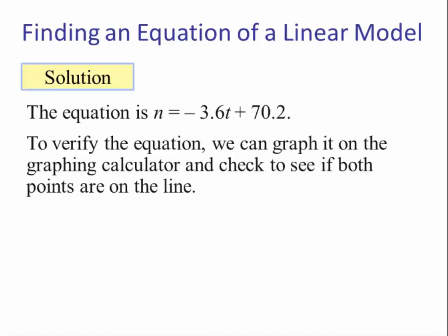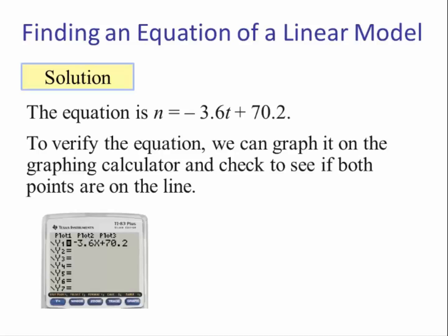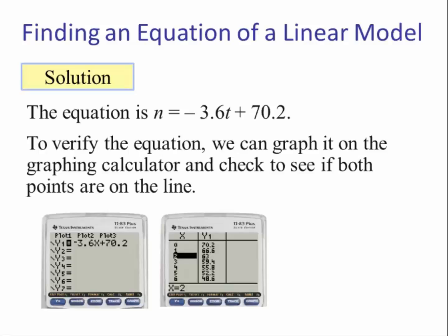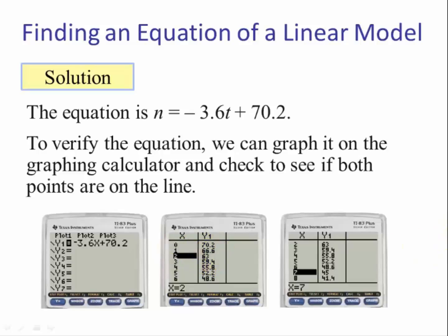To verify the equation, we can graph it on the graphing calculator and check to see if both points are on the line. We hit Y=, type in the equation, then hit the table function (second and graph). We scroll down and see when X is 2, Y is 63 — that point is on the graph. Scrolling further, when X is 7, Y is 45. Both points are verified on the graph.